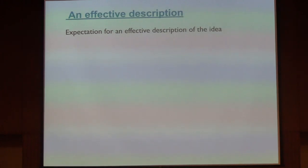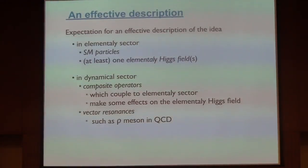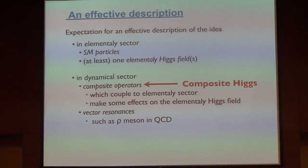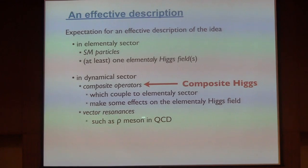Let's construct an effective description for the phenomenology. In the elementary sector we have standard model particles and at least one elementary Higgs field. In the dynamical or composite sector, we expect composite operators like meson operators which enter the elementary sector and affect the elementary Higgs fields. The simplest possibility is composite Higgs scalars. We also assume some vector resonance exists in the dynamical sector — analogous to the rho meson in QCD — which can be identified as a new gauge boson.